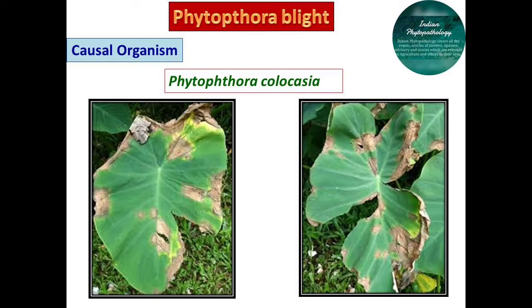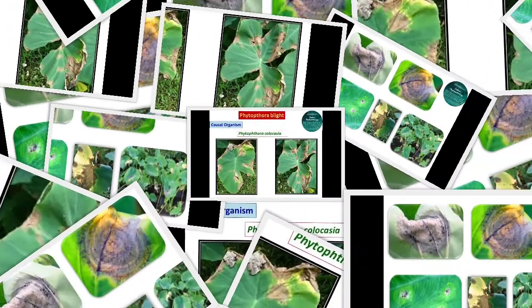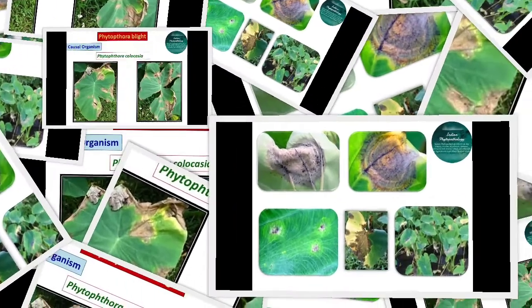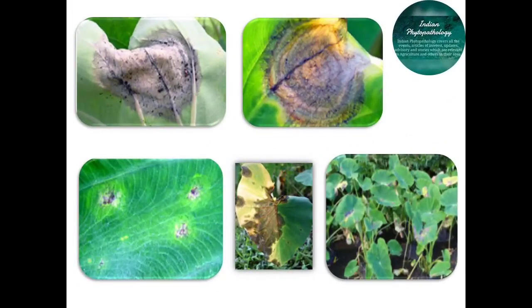The spots enlarge rapidly, becoming circular, zonate, and purplish brown to brown in color. On the lower surface of leaves, spots have water-soaked symptoms. A dry gray appearance and hard globules of plant exudates are sometimes present on the lower side of leaves.